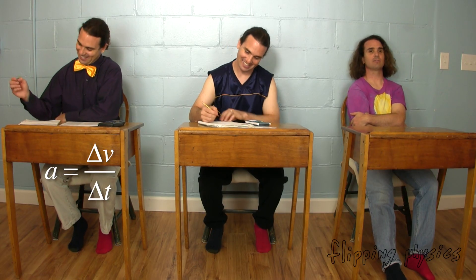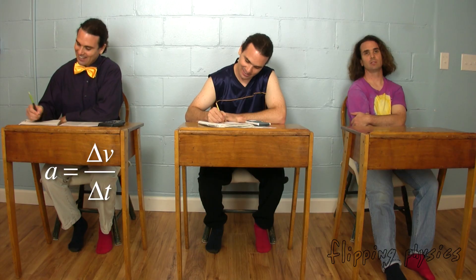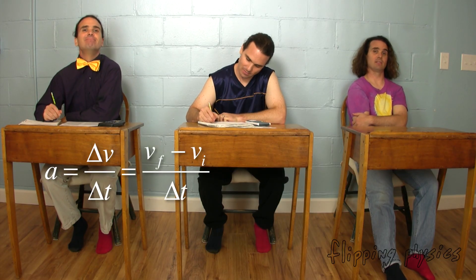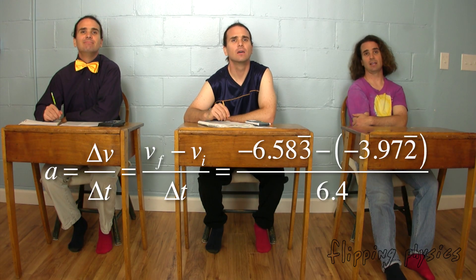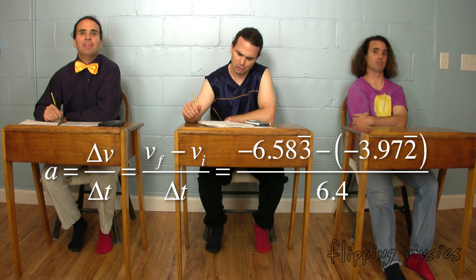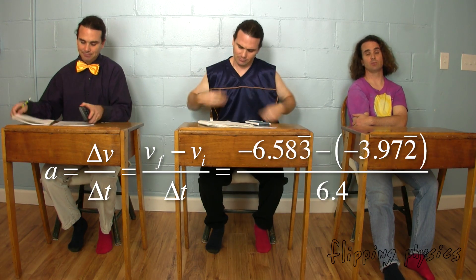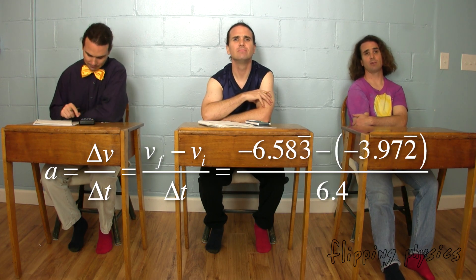What should we do now? We start with the equation. Acceleration equals the change in velocity over the change in time, where the change in velocity is equal to velocity final minus velocity initial. Once we have the whole equation written down, we can just plug in all the numbers: negative 6.5833333 minus negative 3.9722222, that whole quantity divided by 6.4.